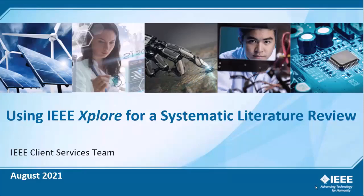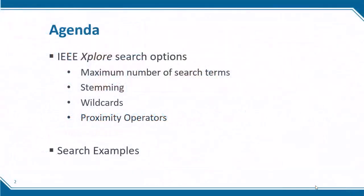Welcome to the Using IEEE Xplore for a Systematic Literature Review Tutorial. Topics covered in this tutorial include the maximum number of search terms, stemming, wildcards, proximity operators, and search examples. This tutorial will help you take a complex search query and restructure it to work in the IEEE Xplore Digital Library.